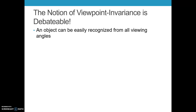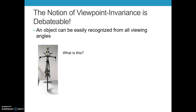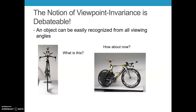Like Mar, Biedermann believed in viewpoint invariance — the idea that an object can be easily recognized from all possible viewing angles. For example, this image may take a moment, but from the side it is a racing bike. You might have thought it was a drone or robot at first, but the side view made it much easier. If you had trouble recognizing it, that suggests viewpoint invariance is not as infallible as claimed.